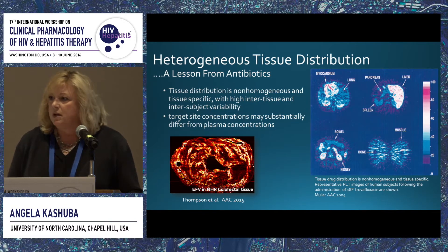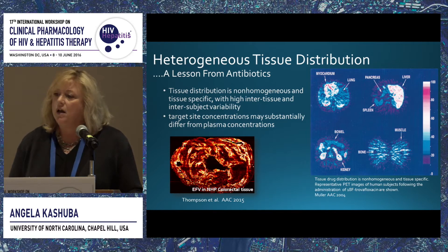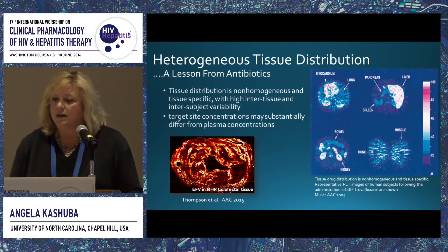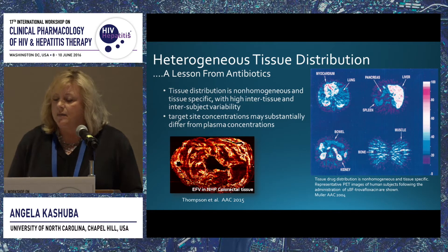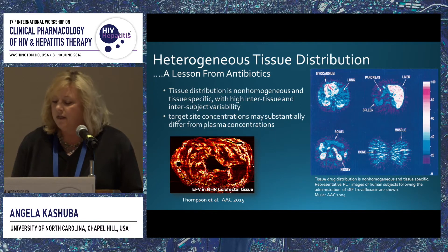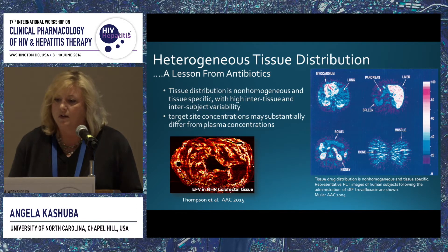Recently Corbin Thompson, a graduate student in my laboratory, published data using mass-spec imaging of efavirenz in non-human primates, evaluating exposure across different tissues. In a cross-section of colorectal tissue of a non-human primate dosed with efavirenz, high concentrations are identified in yellow and white, and low concentrations in red or black. There is also heterogeneous distribution — something we know from antibiotics and now also see for antiretrovirals.